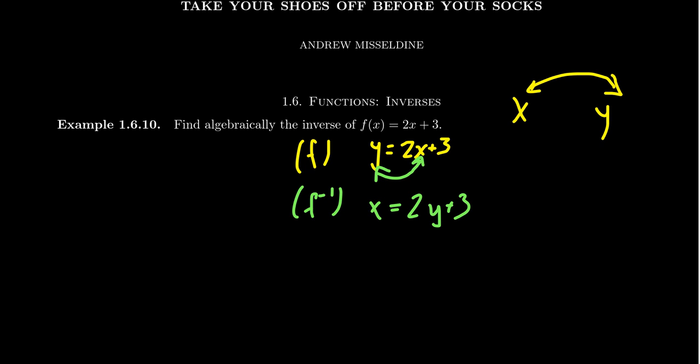And then we just proceed to solve for y here, and that'll then give us the algebraic representation of this function. So we can accomplish this by subtracting 3 from both sides. Notice we end up with 2y = x - 3. Then divide both sides by 2, so the 2 cancels on the left-hand side, and we end up with y = (x - 3)/2.